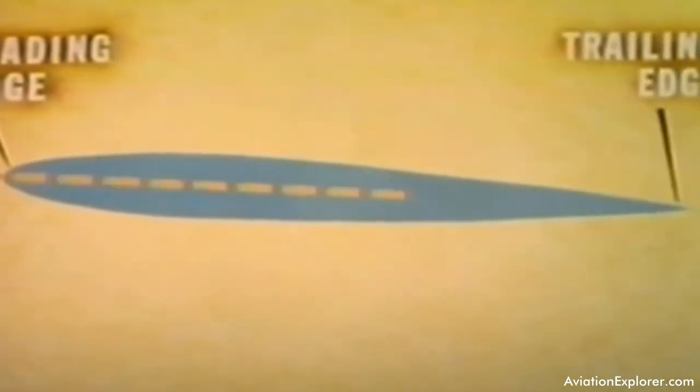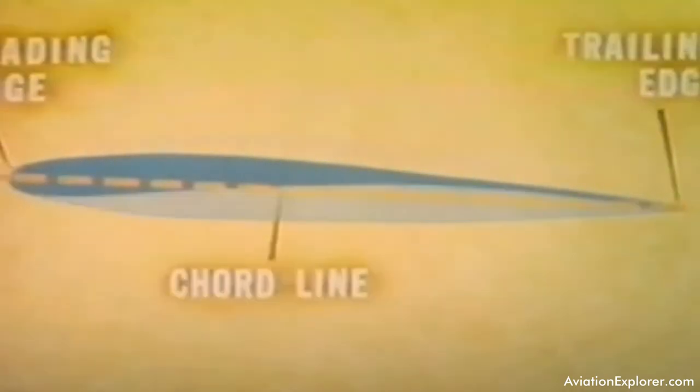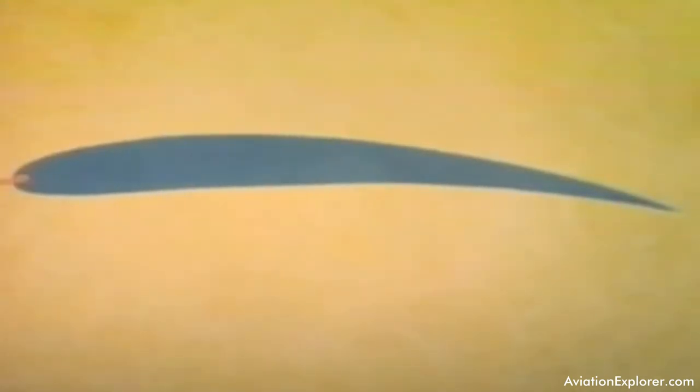The center line from the center of the leading edge to the point of the trailing edge is called the cord line. We also speak of camber of an airfoil. Camber refers to curvature.